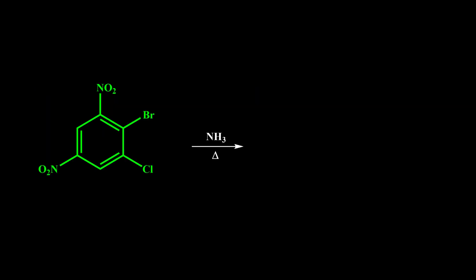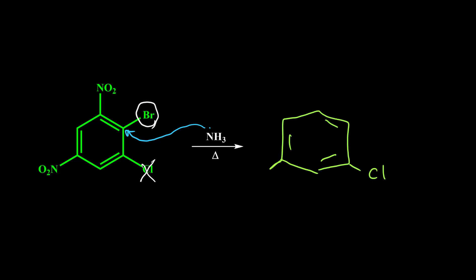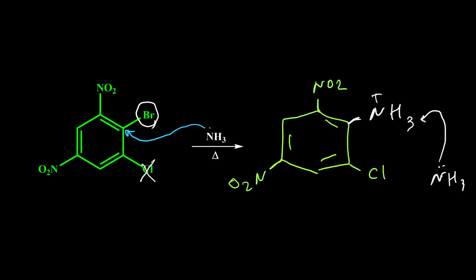Here, bromine is in the right place for NAS reaction but chlorine is not, so bromine will be replaced by ammonia while chlorine remains unchanged. In the product, chlorine stays, we have NO2 here and NO2 here, and instead of bromine we have NH2. Similar to the methylamine example, we first get NH3 positive, but because we use more than one mole of ammonia, the second mole of ammonia neutralizes the intermediate by acting as a base — taking one hydrogen — so in the final product we have NH2.